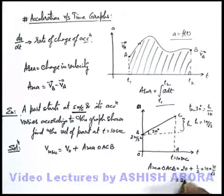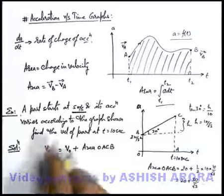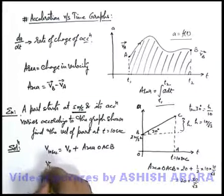So this can be written as 20 plus 50 by root 3.